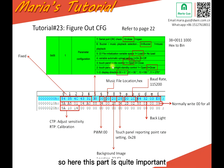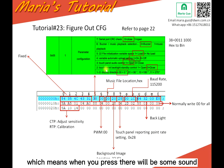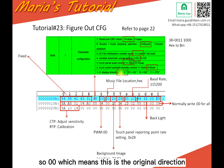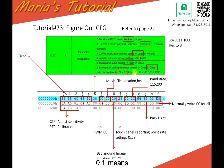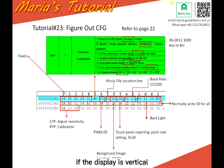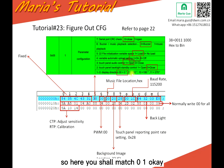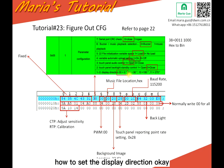This part is quite important. And here, this is the touch panel audio control — one means open, which means when you press, there will be some sound. And this is the backlight — open or zero. And this is the display direction. So 00 means the original direction, and 01 means changed angle. So if the display is vertical in factory settings, and you want to show the project in horizontal format, you should match 01. This is how to set the display direction.